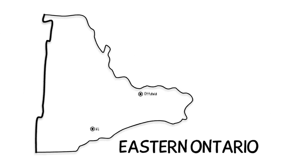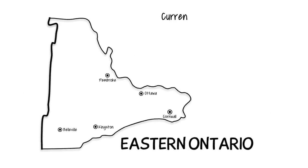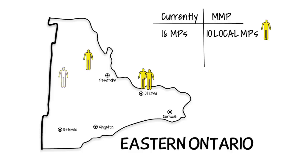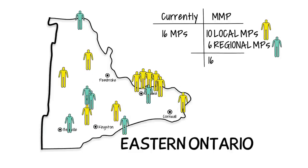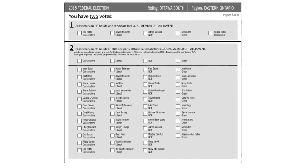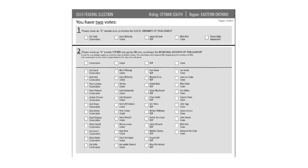Let's explore the kind of results we might expect to see with an MMP system in Canada. If we look at the region of Eastern Ontario, from Ottawa to Kingston and as far west as Belleville, normally we would elect 16 MPs. Under an MMP system, we would also elect 16 MPs, but we would elect 10 local MPs and 6 regional MPs. The local MPs would be divided into 5 single-member ridings in Ottawa, and the rest spread across the region. Here's what a ballot would look like under MMP for the riding of Ottawa South, part of our Eastern Ontario region.